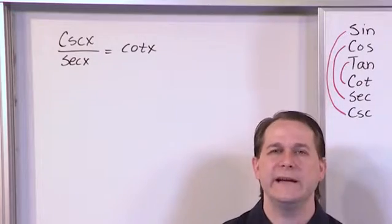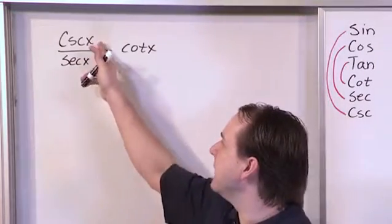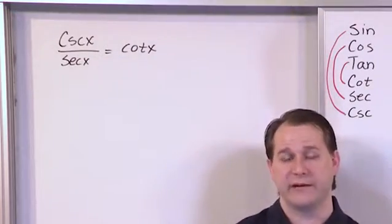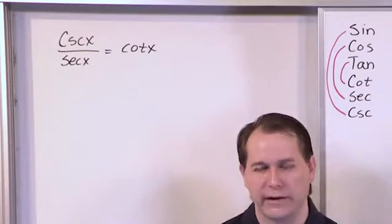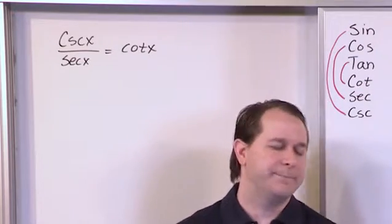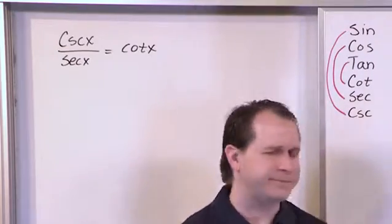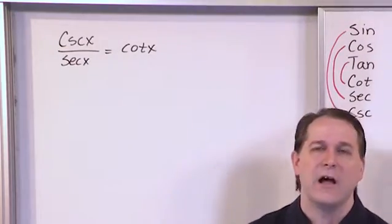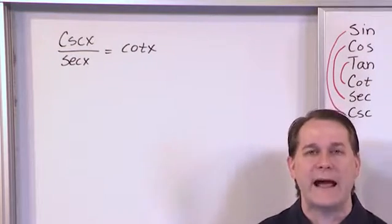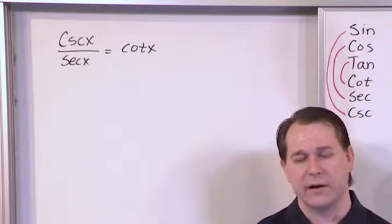When you see any variable, anything listed in a trig function like that, you kind of just need to ignore it. It's using the variable, it's just a variable can be anything. I mean, we're using thetas here, we're using x's here, I could use a, b, or c, or whatever I want to. It's just like algebra. I can use any variable I want.